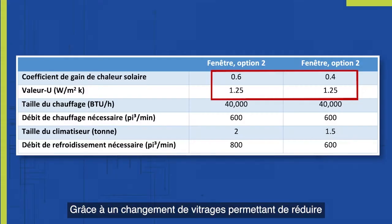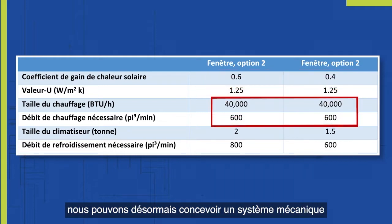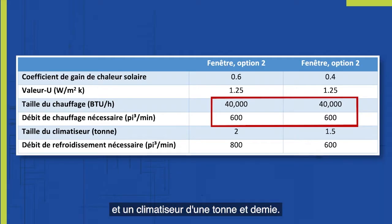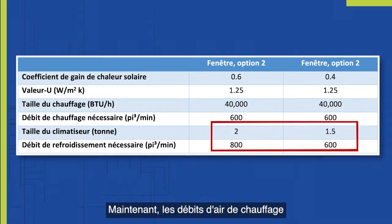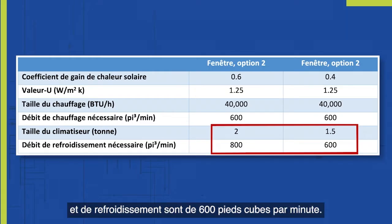By making a window selection change to reduce the solar heat gain coefficient to 0.4, we can now design a mechanical system using a 40,000 BTU per hour furnace and a one and a half ton air conditioner. Now both the heating and cooling air flows are 600 CFM.